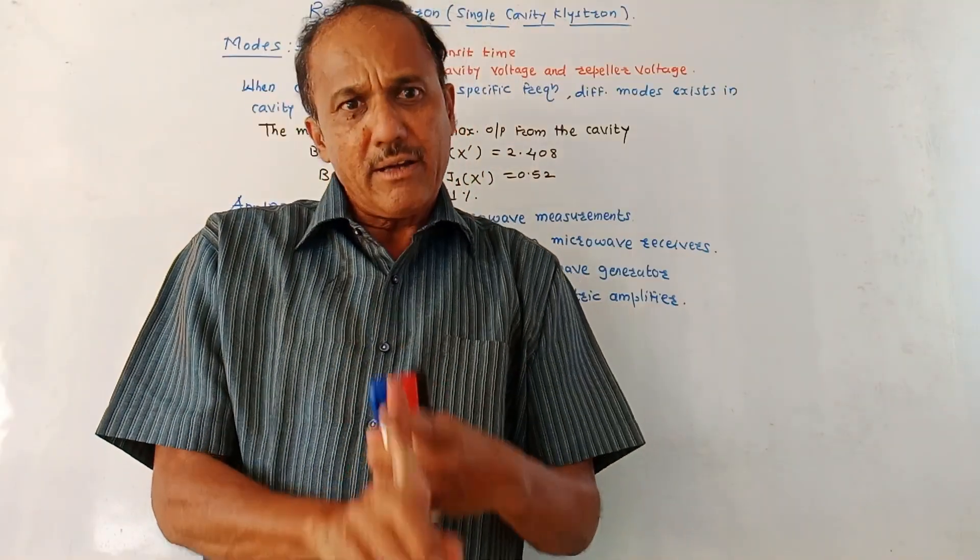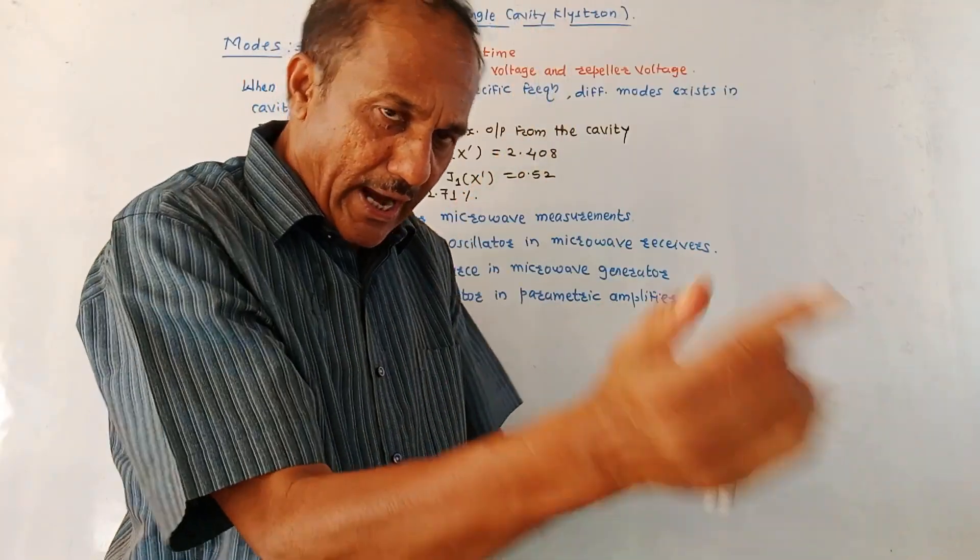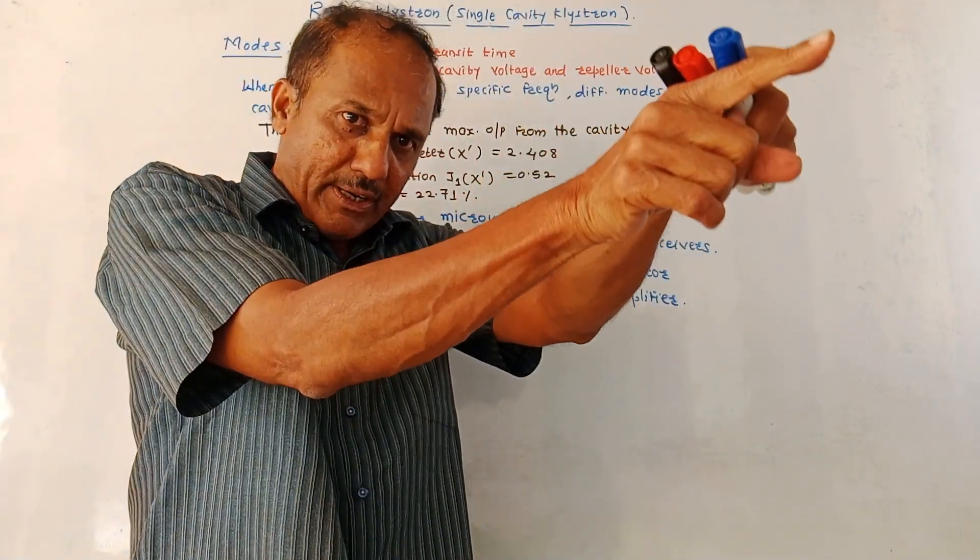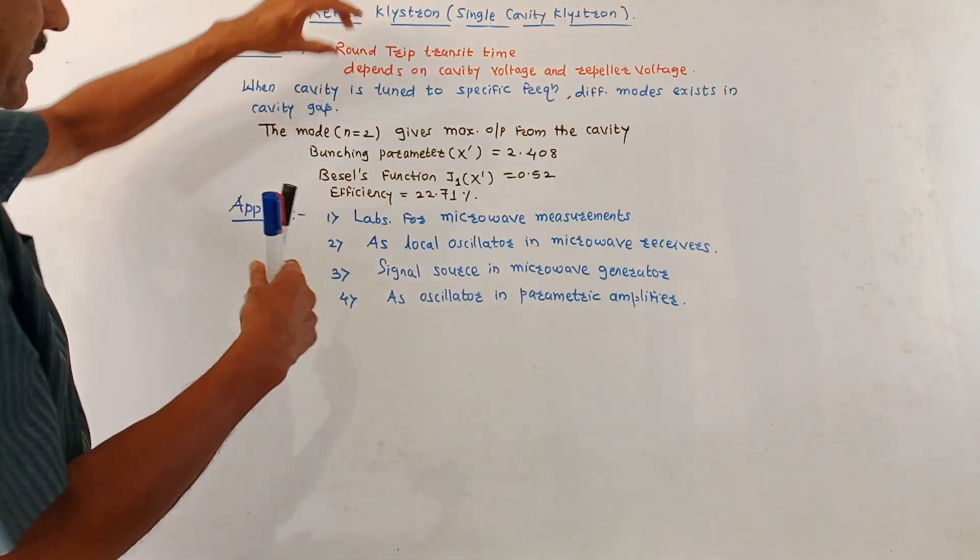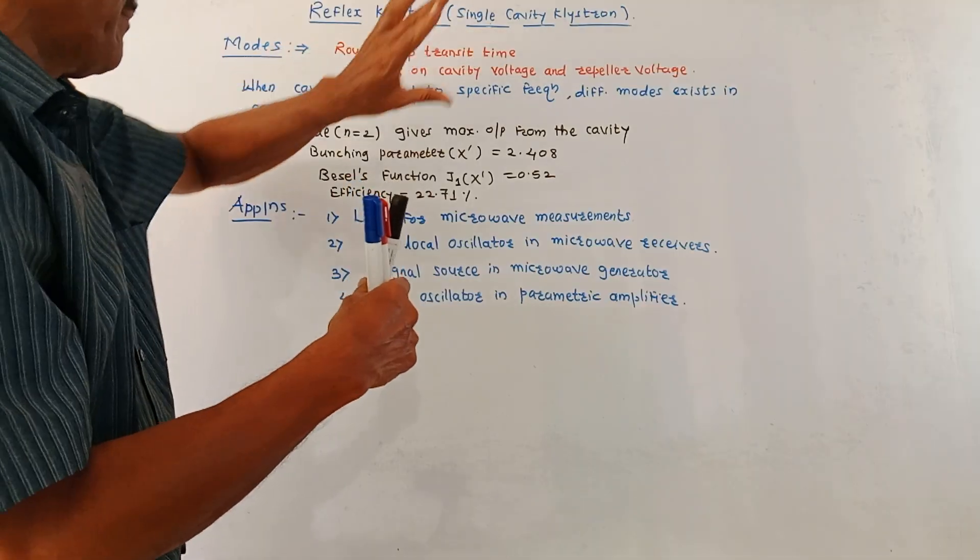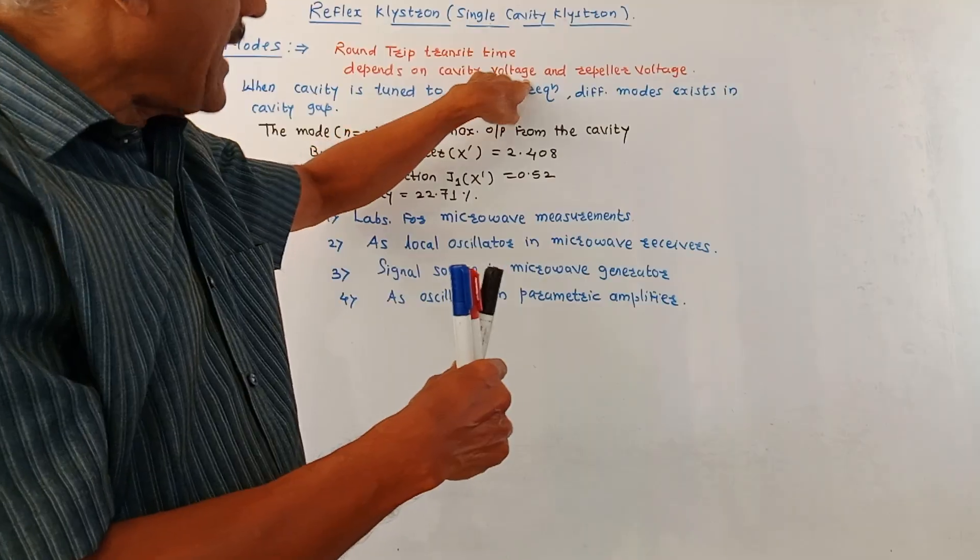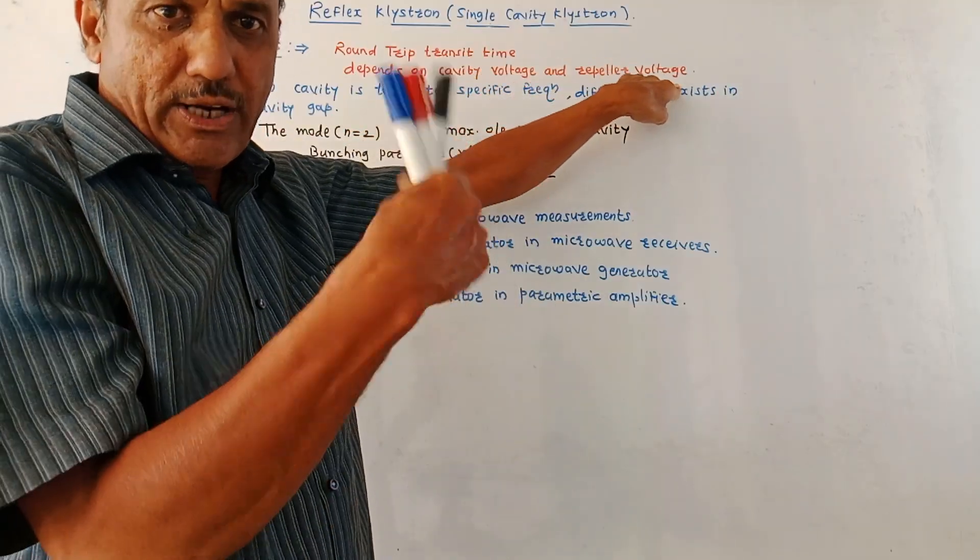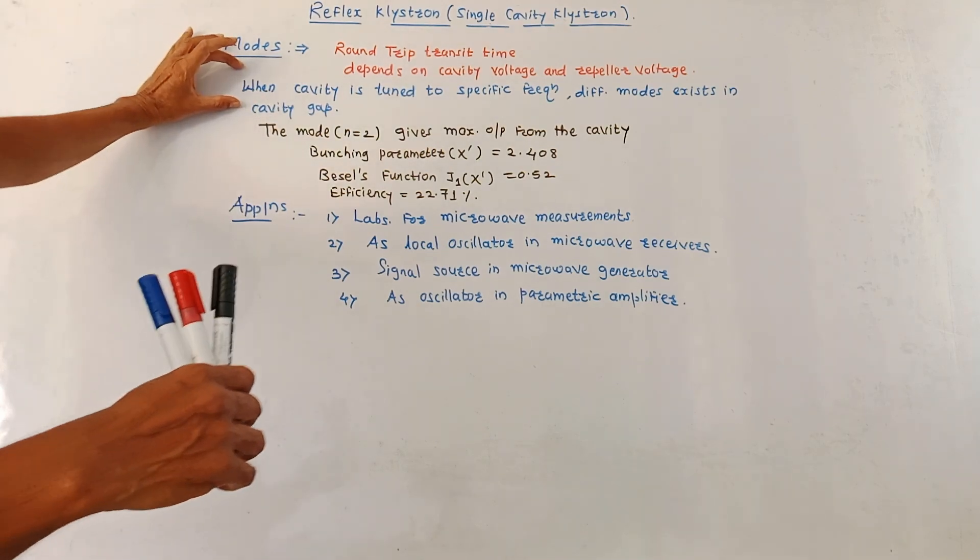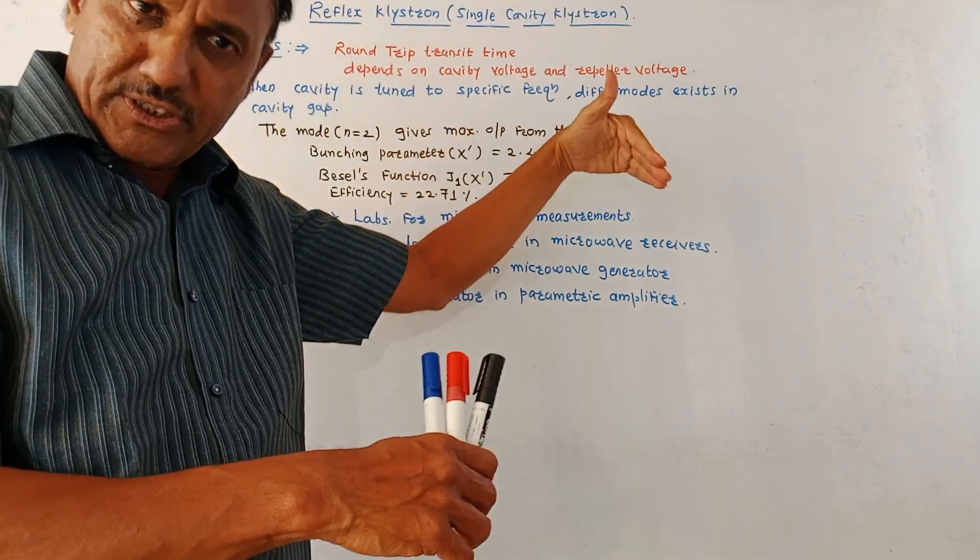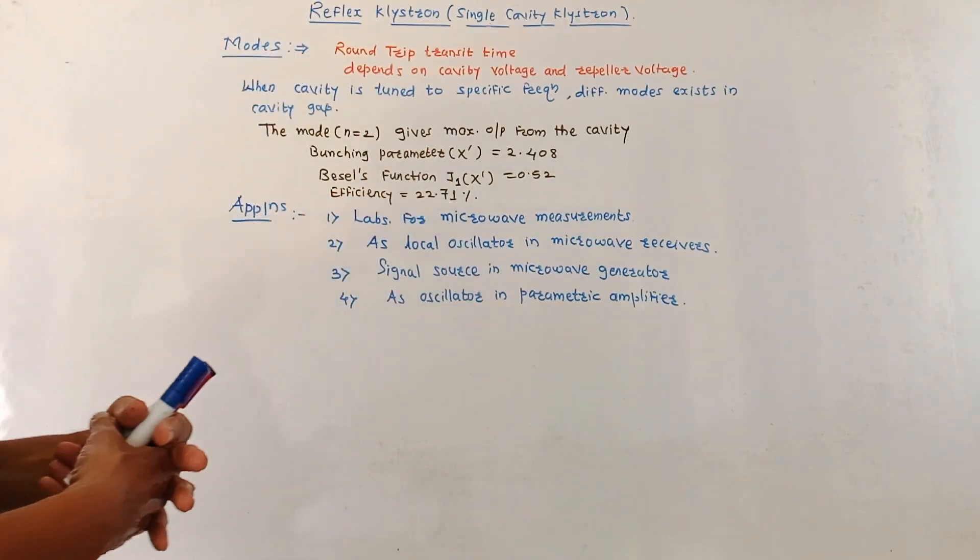The time period for the electron to move from cavity gap to the repeller anode and come back from repeller anode to the cavity gap after reflection is called round trip transit time. This depends on the cavity voltage and the repeller voltage applied at the repeller anode. When the cavity is tuned to a specific frequency, different modes exist inside the cavity gap. All these modes depend on the cavity voltage and the repeller voltage.